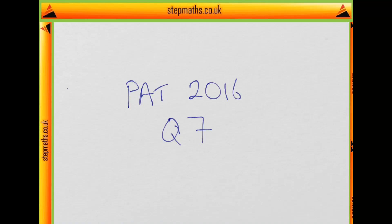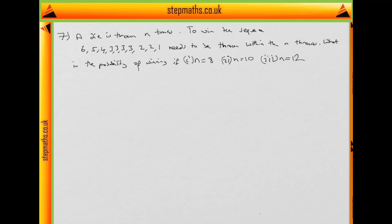Hi, so we're going to go through the paper here in 2016, looking at question 7. In question 7, we're told a die is thrown n times, a fair die, six sided die.